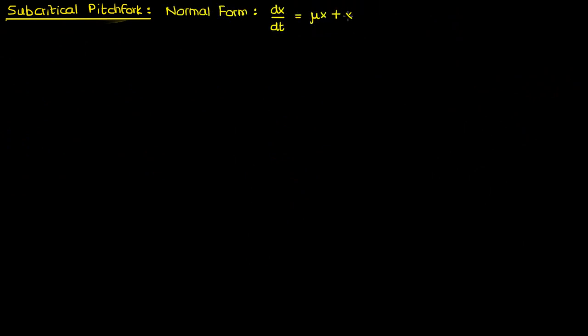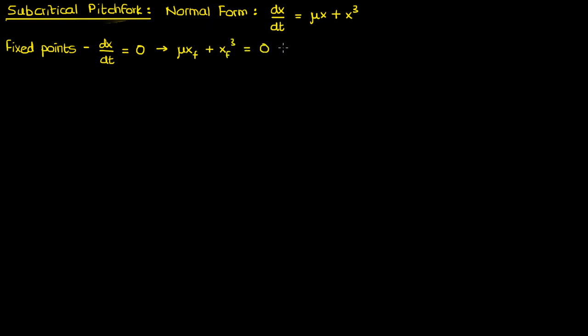Let's now move on to the subcritical pitchfork bifurcation. A subcritical pitchfork is very similar to a supercritical pitchfork. The main difference is that the normal form now has a plus sign in front of the cubic term instead of a minus, giving rise to slightly different dynamics. We begin by finding the fixed points: set dx/dt = 0 and solve for x. A simple factorization gives xf times (μ + xf²) on the left.